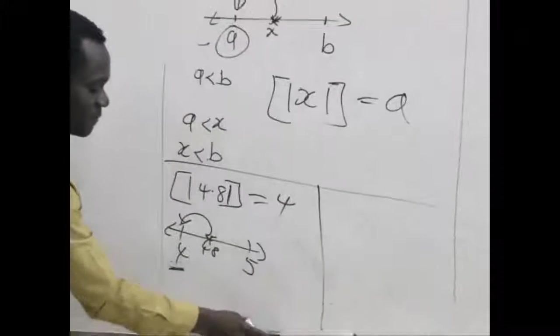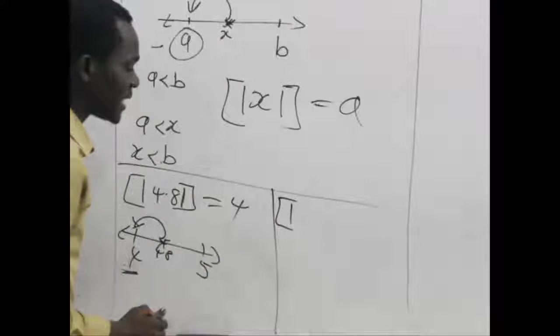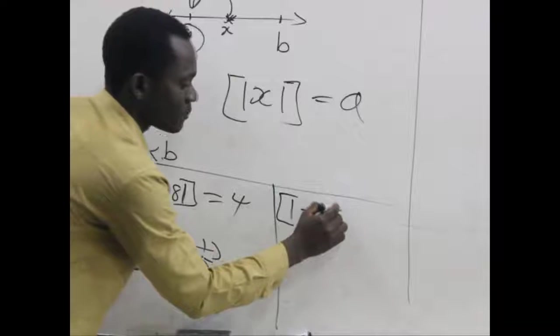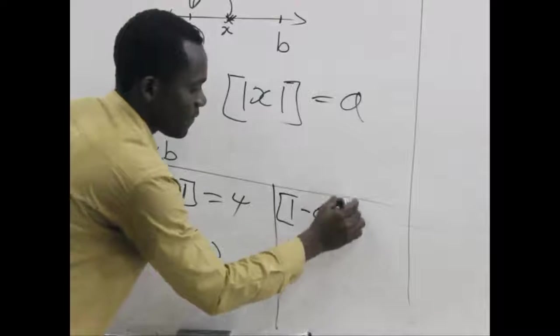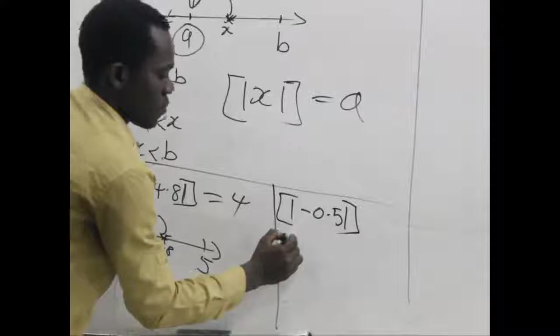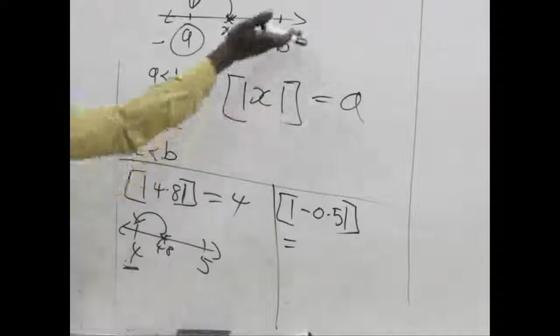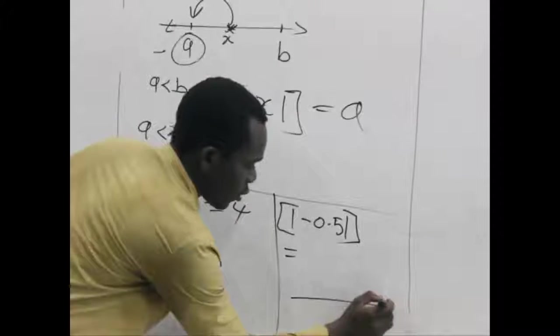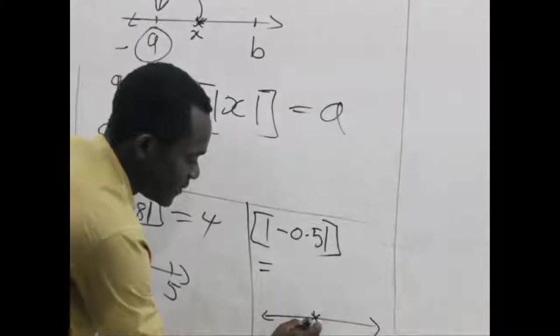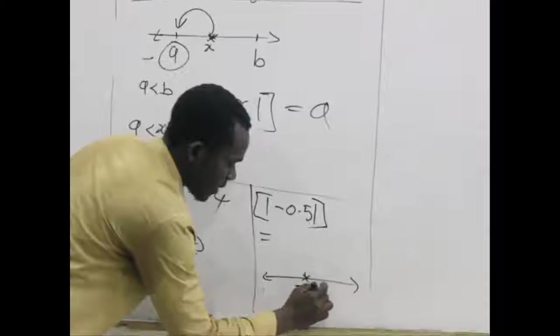Also when we have, let's say, a negative number. The greatest integer function for negative 0.5. What would my value be? Don't forget we can still use the number line here.